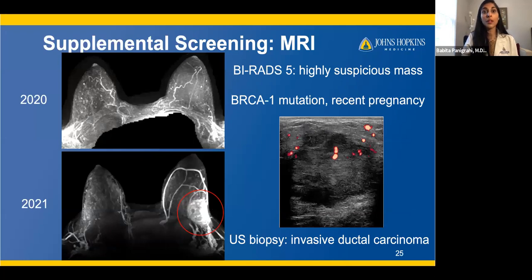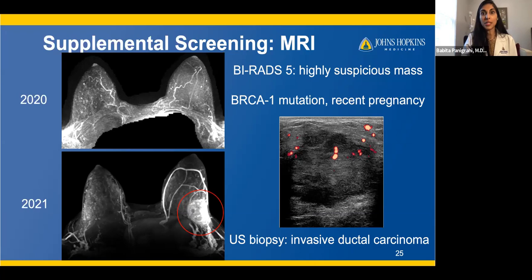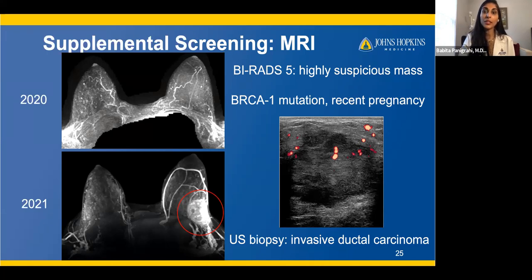This is an example of supplemental screening MRI. In 2020, a BRCA1 mutation patient in her late 20s had been getting supplemental screening MRI starting around age 25 due to a strong family history. Her 2020 screening breast MRI was negative. She then got pregnant, felt a lump, and missed her 2021 screening MRI. When she felt the lump, she came in for ultrasound, which showed a highly suspicious BIRADS-5 mass in her left upper outer breast. After delivery, her MRI showed how large the mass had grown. This came back as invasive ductal carcinoma.